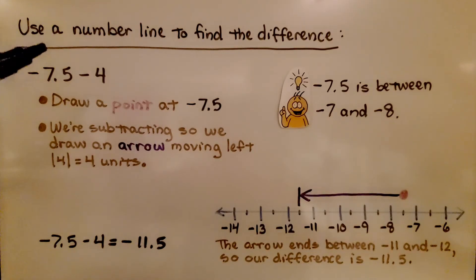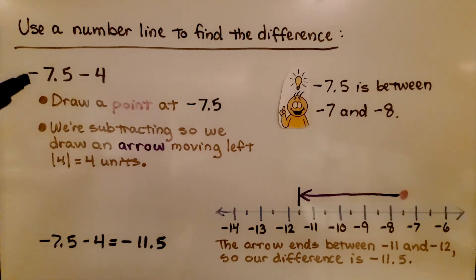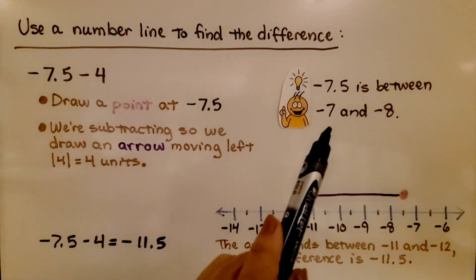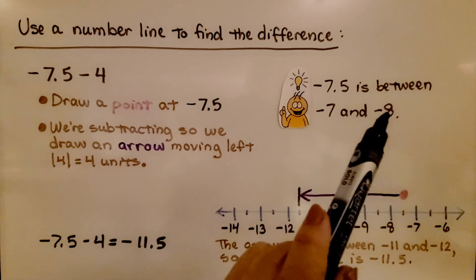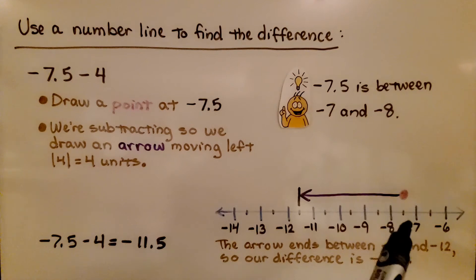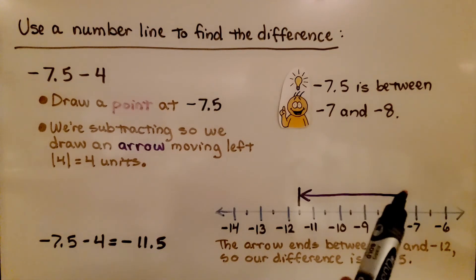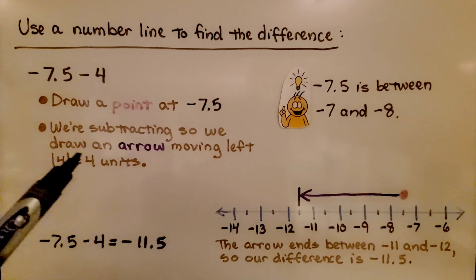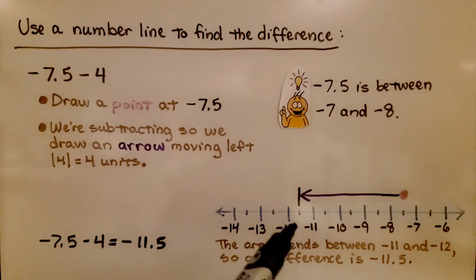Here we use a number line to find the difference of negative 7.5 minus 4, that's negative 7 and 5 tenths minus 4. We draw a point at negative 7.5 — negative 7 and a half — which is between negative 7 and negative 8. We're subtracting, so we draw an arrow moving left 4 units. The absolute value of 4 is 4, and that lands us in between negative 11 and negative 12, so our difference is negative 11 and 5 tenths.